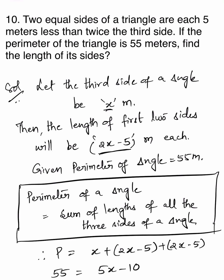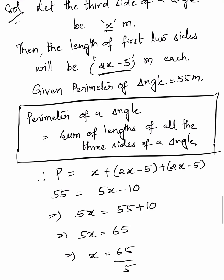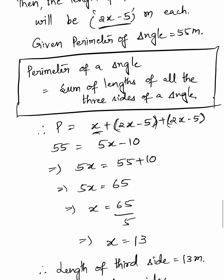With three sides s1, s2, and s3, perimeter P equals s1 plus s2 plus s3. Therefore, P equals x plus (2x minus 5) plus (2x minus 5). Given P is 55 meters: 55 equals 5x minus 10. So 5x equals 55 plus 10, which is 65. Therefore, x equals 65 divided by 5, so x equals 13.